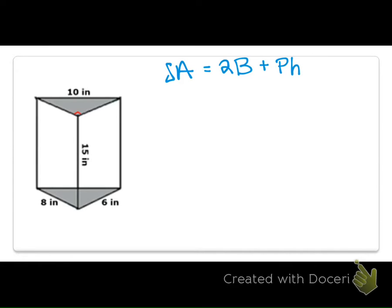So, again, out to the side real quick, we need to make a note that capital B is area of the base, and the capital P is perimeter of the base.